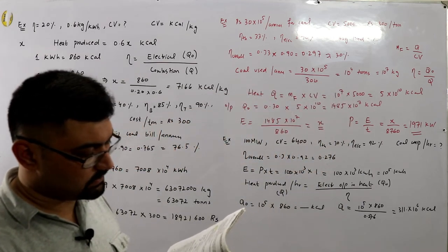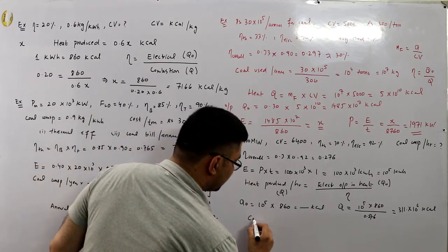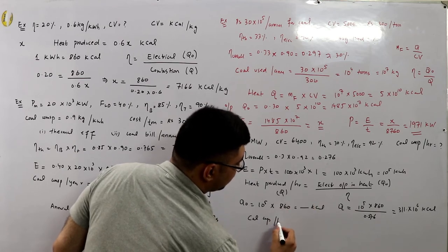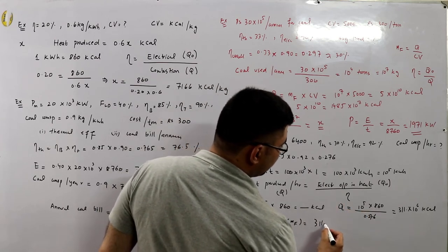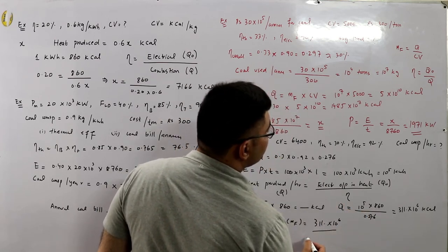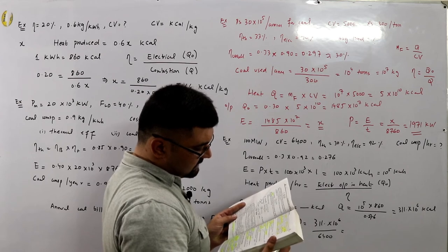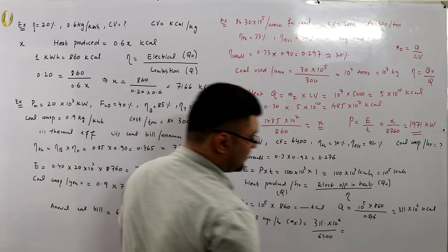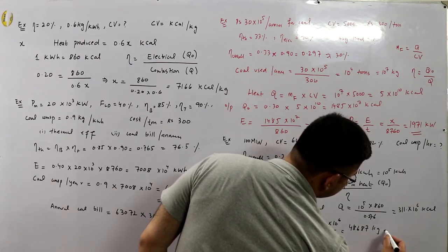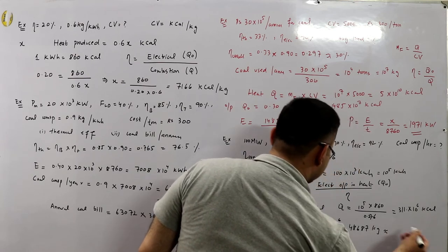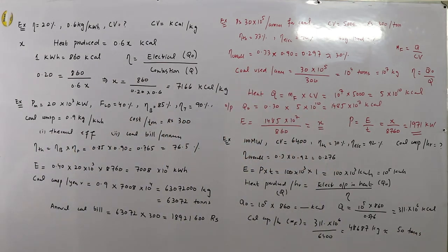Coal consumption per hour = Q / calorific value = (311 × 10^6) / 6400 ≈ 48,687 kilograms per hour, which is approximately 48 to 49 tons — the instructor rounds it to about 50 tons for safety.